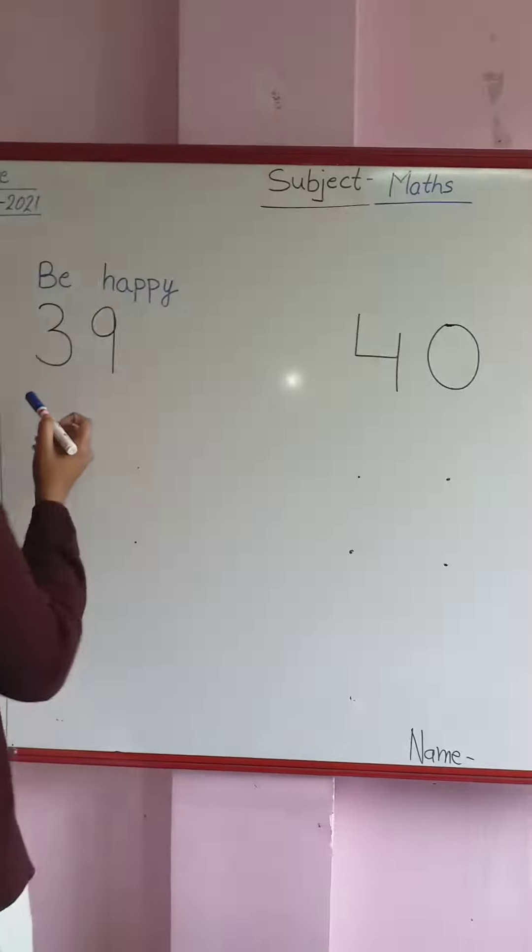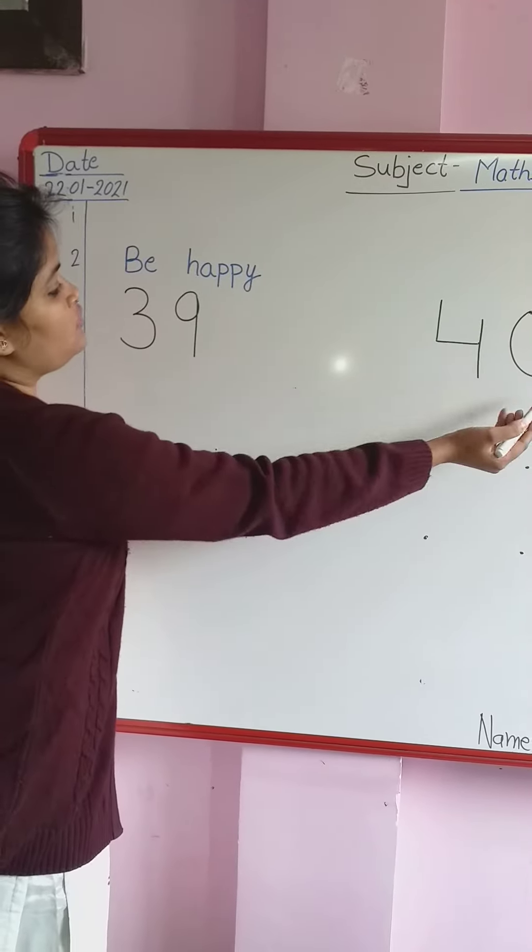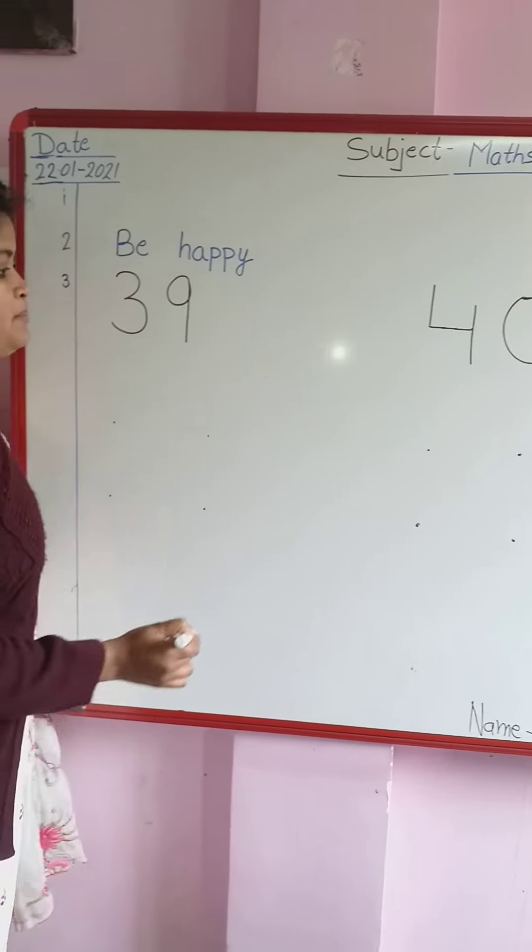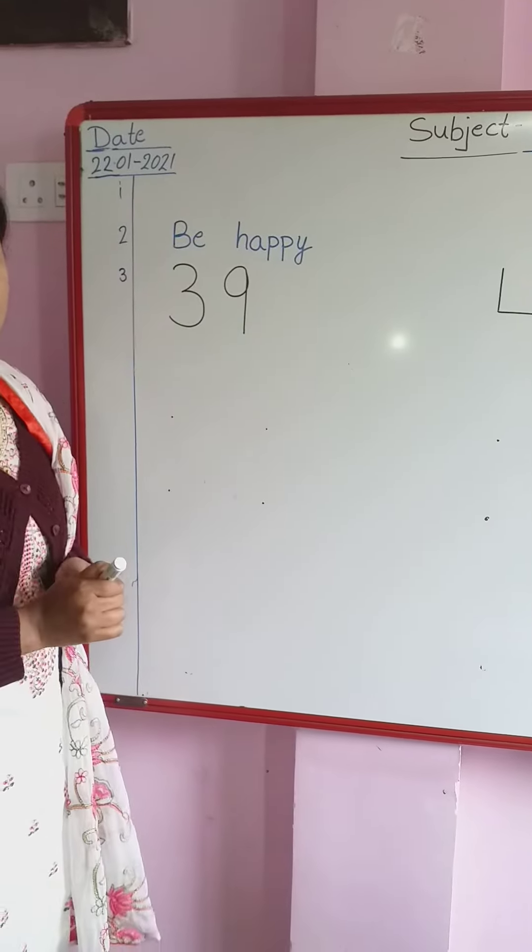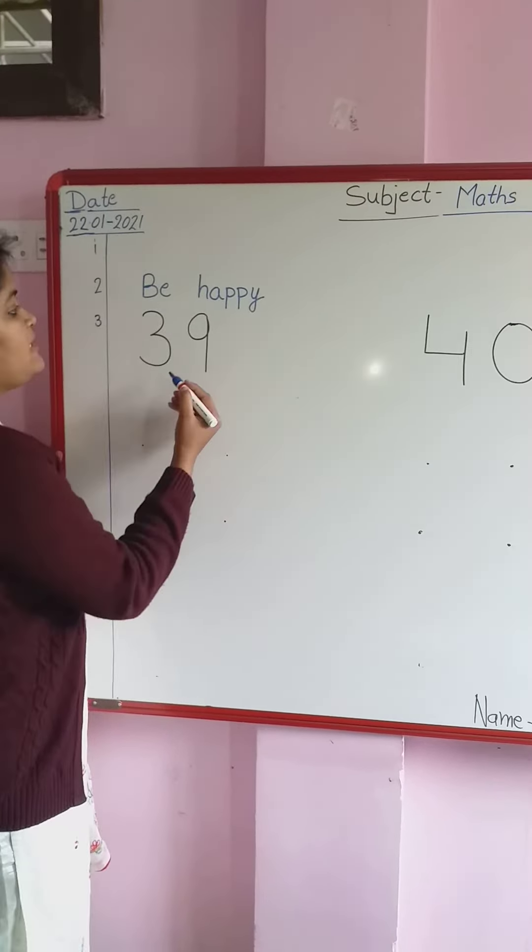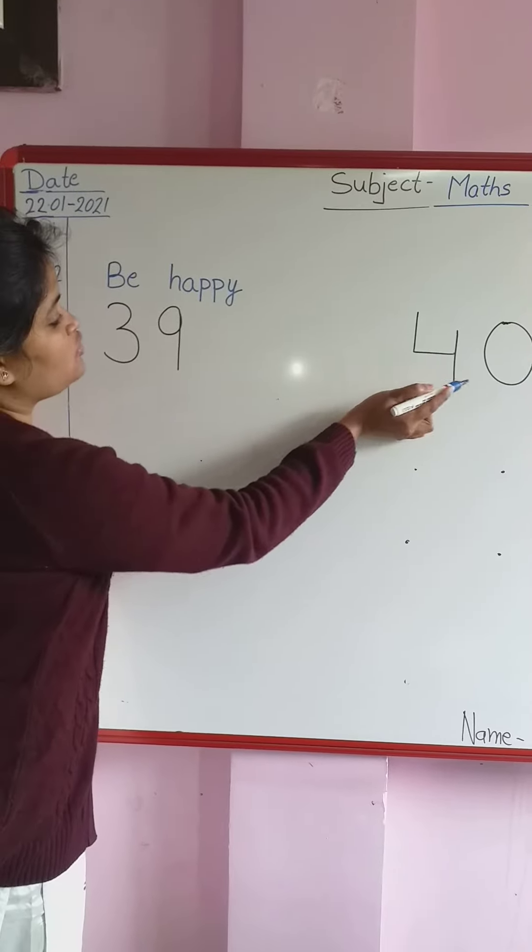What do you want to write? 39 and 40. Now we have to start work. Write 39 and 40. Copy in your copy. One side is 39 and second side 40.